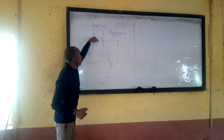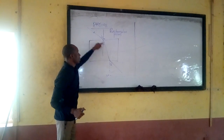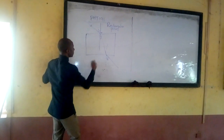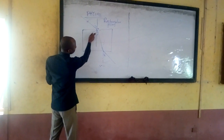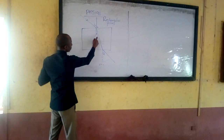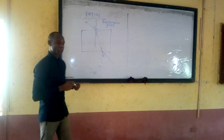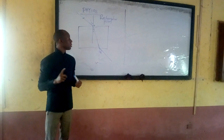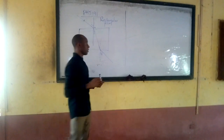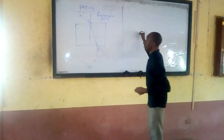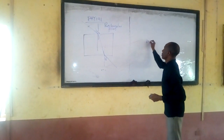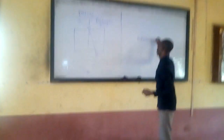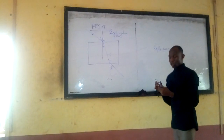The angle that the incident ray makes with the normal is called the angle of incidence. The angle that the refracted ray makes with the normal is called the angle of refraction. The angle of refraction is different from the angle of reflection. The law of reflection says that the angle of reflection equals the angle of incidence.